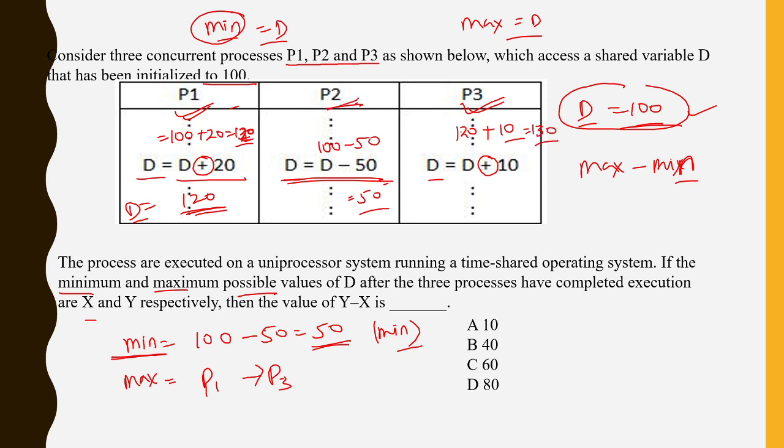So after that maybe P2 is doing, that is different issue. Maybe, that is a different issue. P2 is doing 50 or maybe 130 minus 50, that is anything can be done. But maximum possible value will be possible at this time. At this time you are getting the maximum value 130.